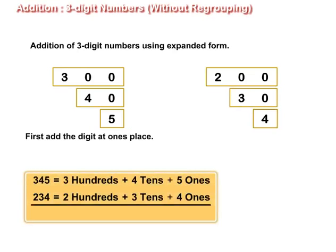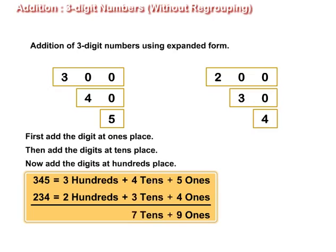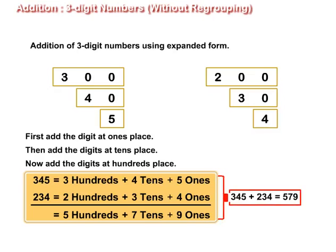Let us first add the digits at the one's place. That is, five plus four is equal to nine. Then add the digits at the tens place. That is, four plus three is equal to seven. Now add the digits at the hundreds place. Three plus two is equal to five. After adding, we find that five is in the hundreds place, seven is in the tens place, and nine is in the one's place. Thus, 345 plus 234 is equal to 579.